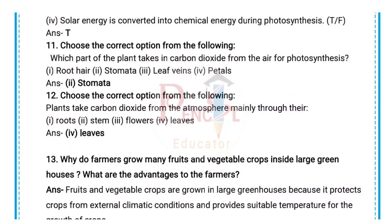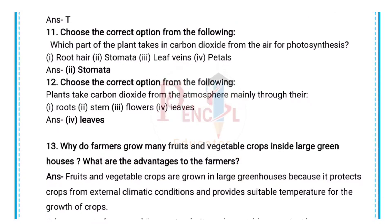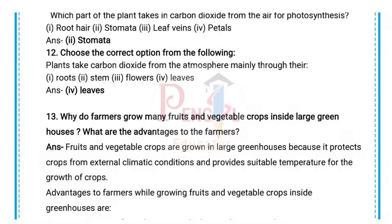Eleventh question: Which part of the plant takes in carbon dioxide from the air for photosynthesis? — Answer: Stomata. Twelfth question: Plants take carbon dioxide from the atmosphere mainly through their — correct answer is: Leaves.